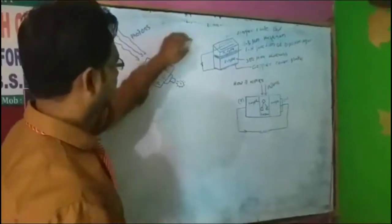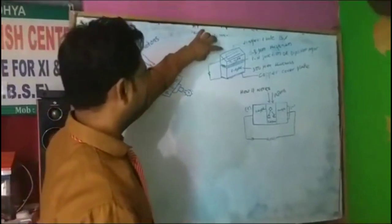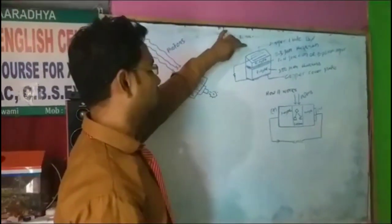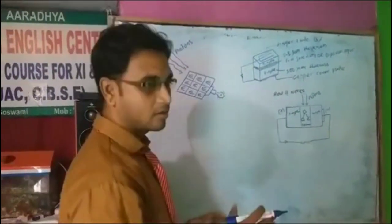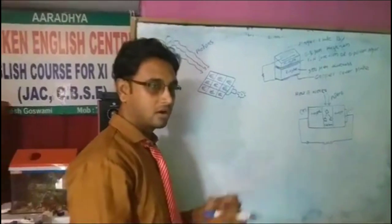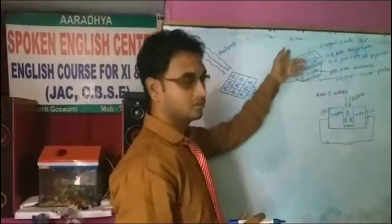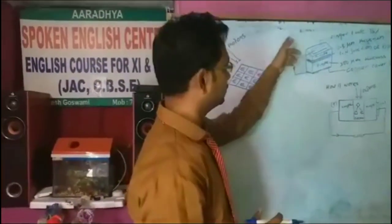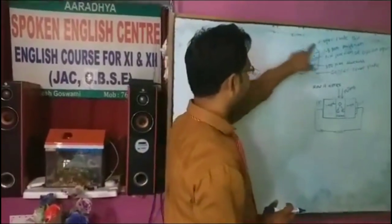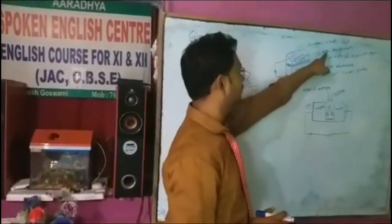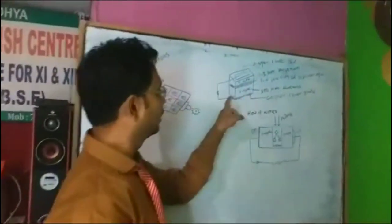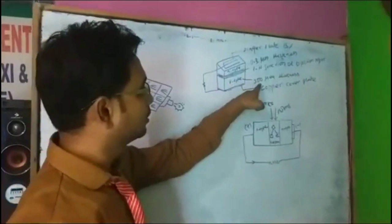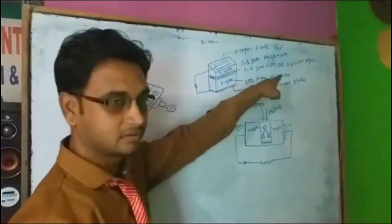At the end, a finger plate is put on top of the N-type. The role of the finger plate is to absorb and conduct the free electrons. The N-type thickness is about 0.3 micrometer and the P-type thickness is 300 micrometer.